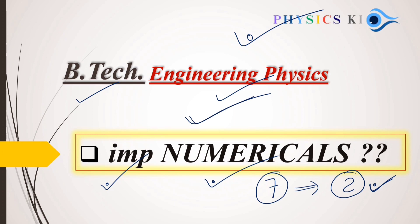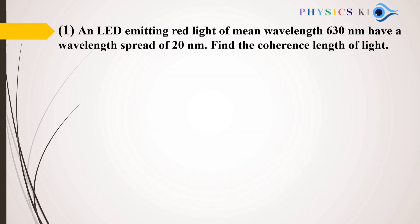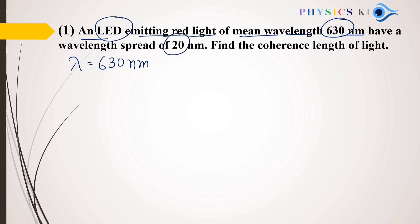Let's solve together these important numericals. Our first problem: an LED emitting red light has a mean wavelength lambda equal to 630 nanometers. The wavelength spread is given — delta lambda is 20 nanometers. Find the coherence length of light.